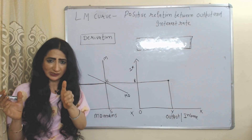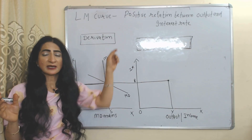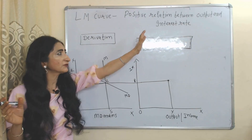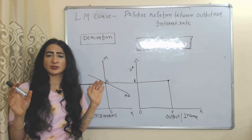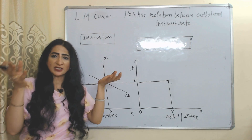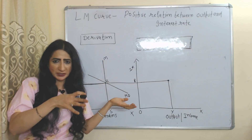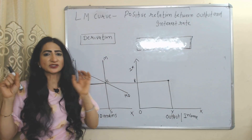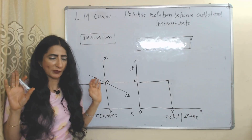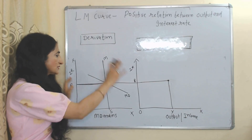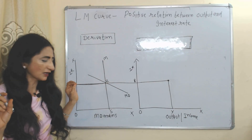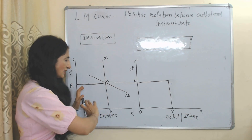Unlike the IS curve which shows an inverse relationship, the LM curve shows a positive relationship between output and interest rate. As interest rate increases, output also increases; as interest rate falls, output will also fall.